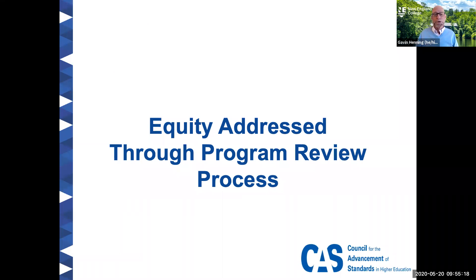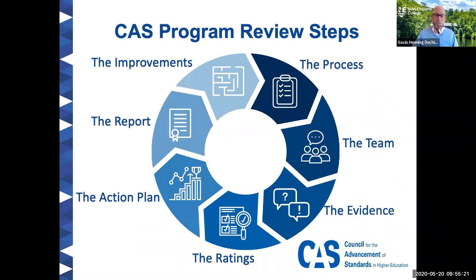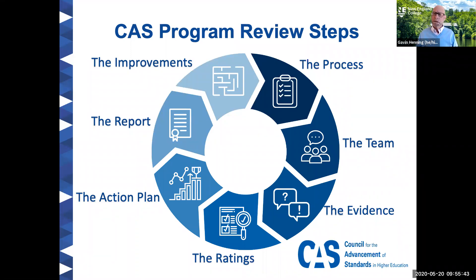CAS also addresses equity through the program review process itself. There are seven steps in the CAS program review process, which really mirror what happens in the academic program review process. The first step is outlining the process itself — what does that look like, what are the reasons for doing a self-assessment, how does this connect to the institutional assessment processes, and what does the timeline look like? The next step is who should be on the team — who are the members, how many should there be, and whose voices should be included.